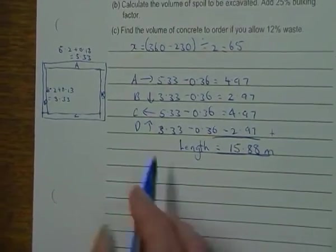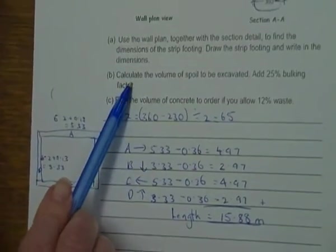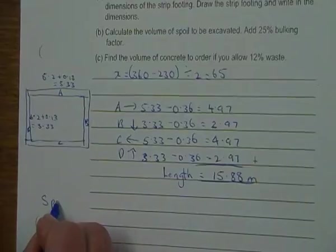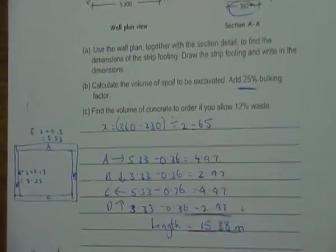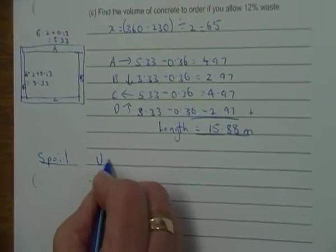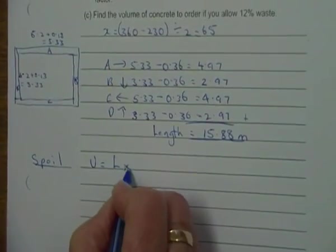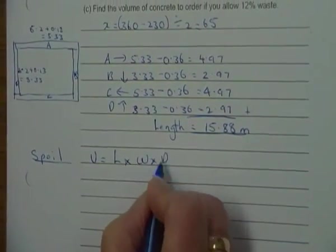Now, we're looking at our spoil. The first thing we're going to calculate is our spoil, and it has 25% bulking. So, volume, we're going to do length times width times depth.